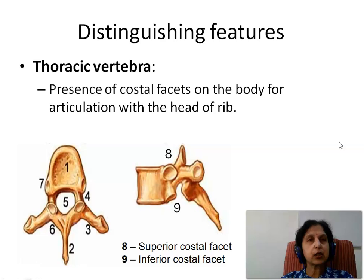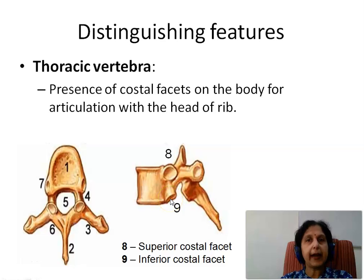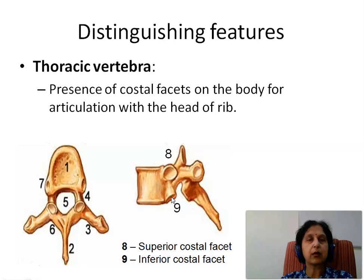As far as the thoracic vertebrae are concerned, this vertebra shows the presence of costal facets on the body for articulation with the head of the rib. This is a lateral view of a typical thoracic vertebra showing the costal facets on the sides of the body, which are meant for articulation with the head of the rib. This is the characteristic feature seen in the thoracic vertebra.